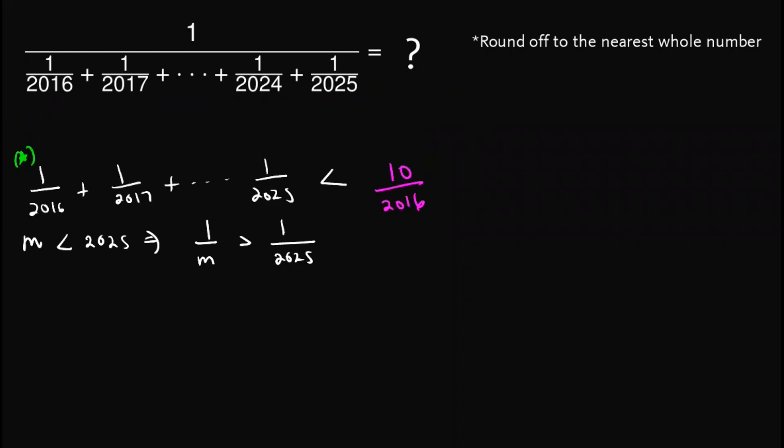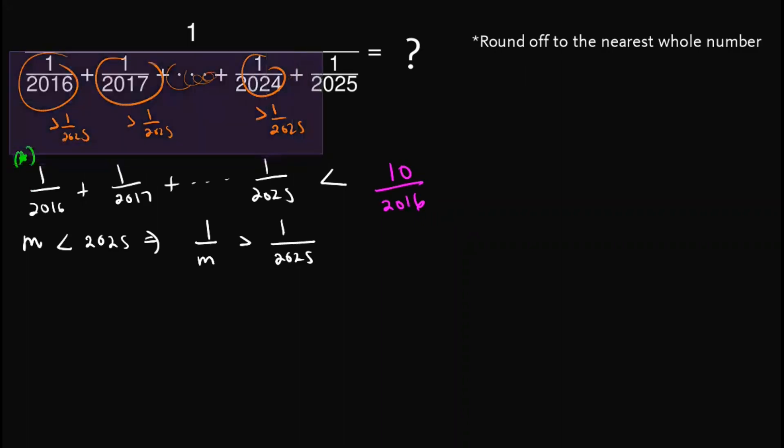Now, we know that since 2016 is less than 2025, then this one is greater than 1 over 2025. This one as well is greater than 1 over 2025. And indeed, every element in here is greater than 1 over 2025.